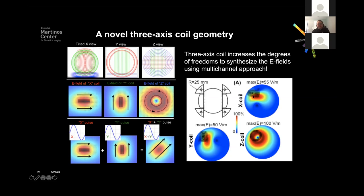Looking at the induced E-field patterns, there are pros and cons. The focality for the X and Y coils is better — they're inherently focal — but efficiency goes down by 50%. Nevertheless, we should think about what the whole array is capable of producing. Even though there's a hit in efficiency, we gain in packing density and the capability of adding more degrees of freedom.